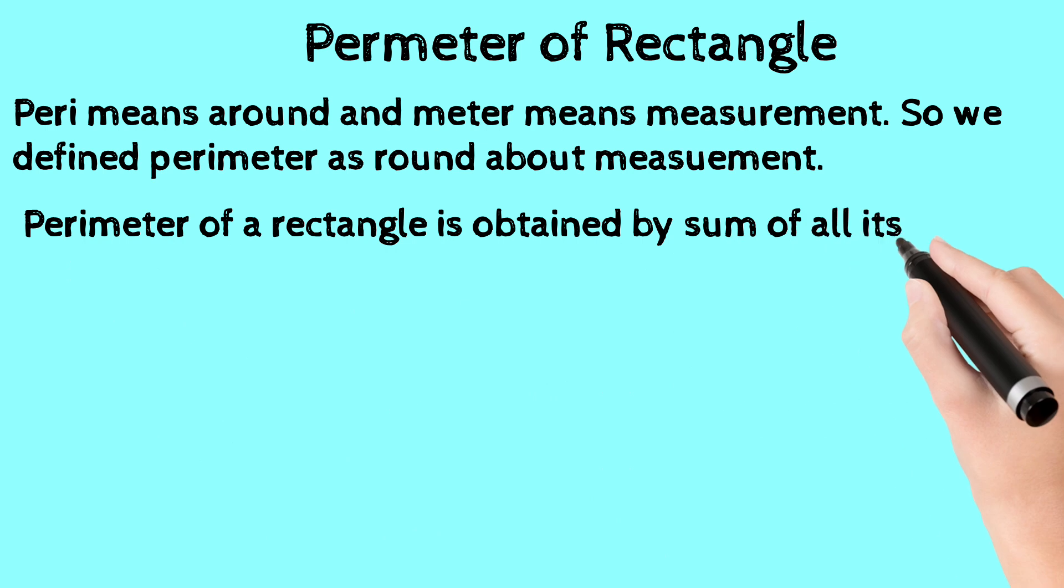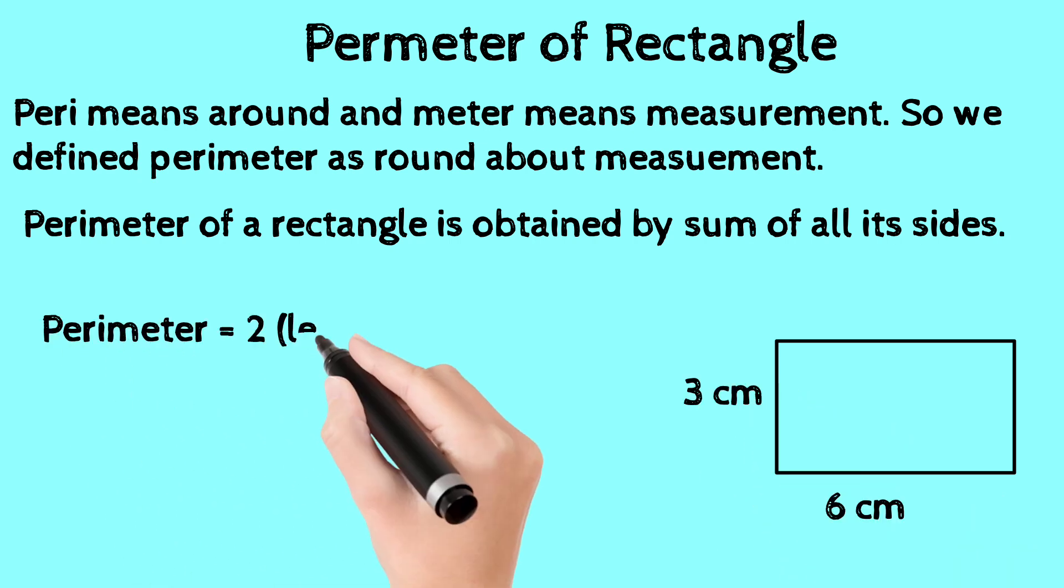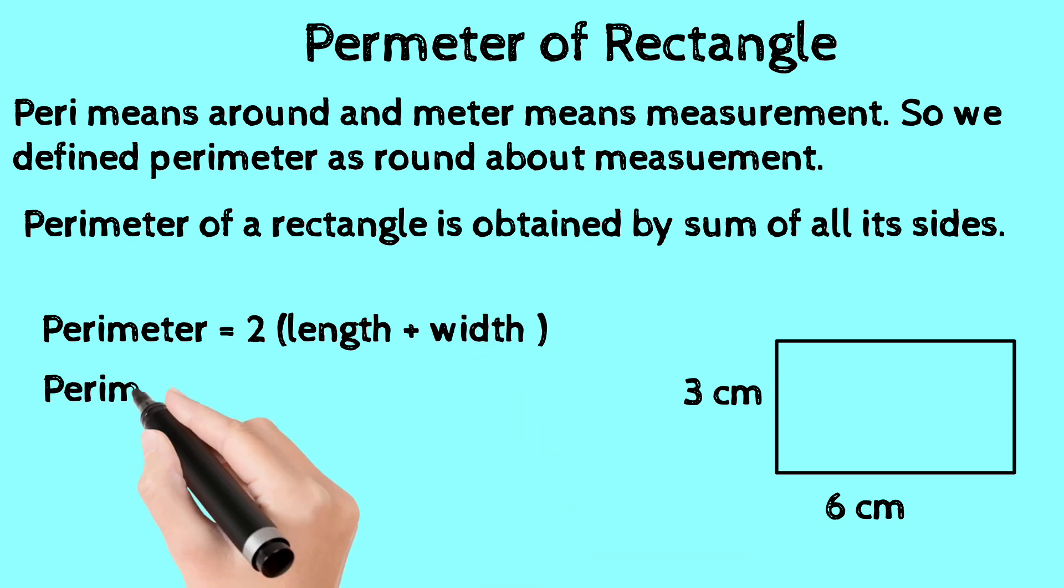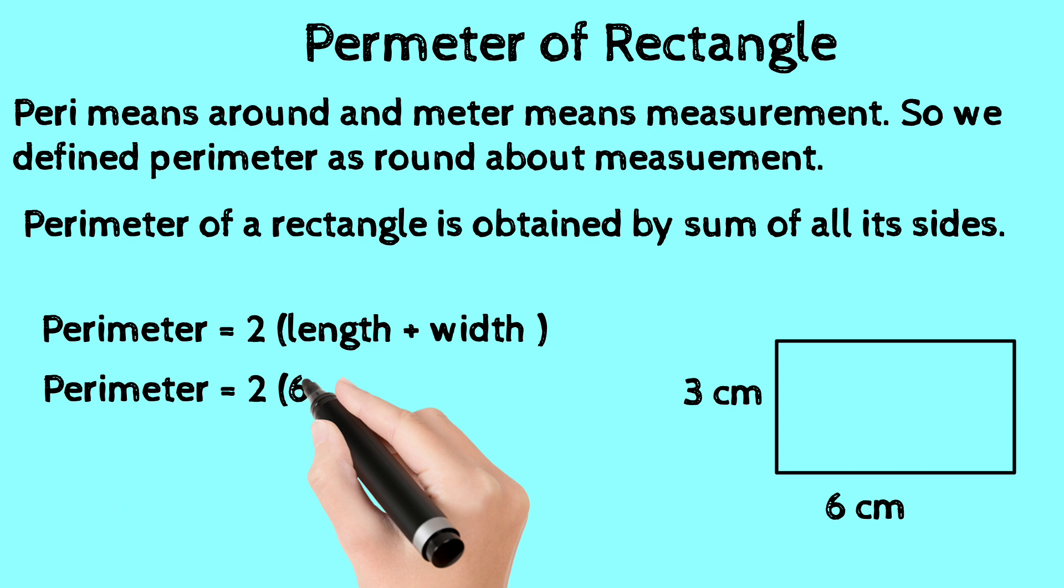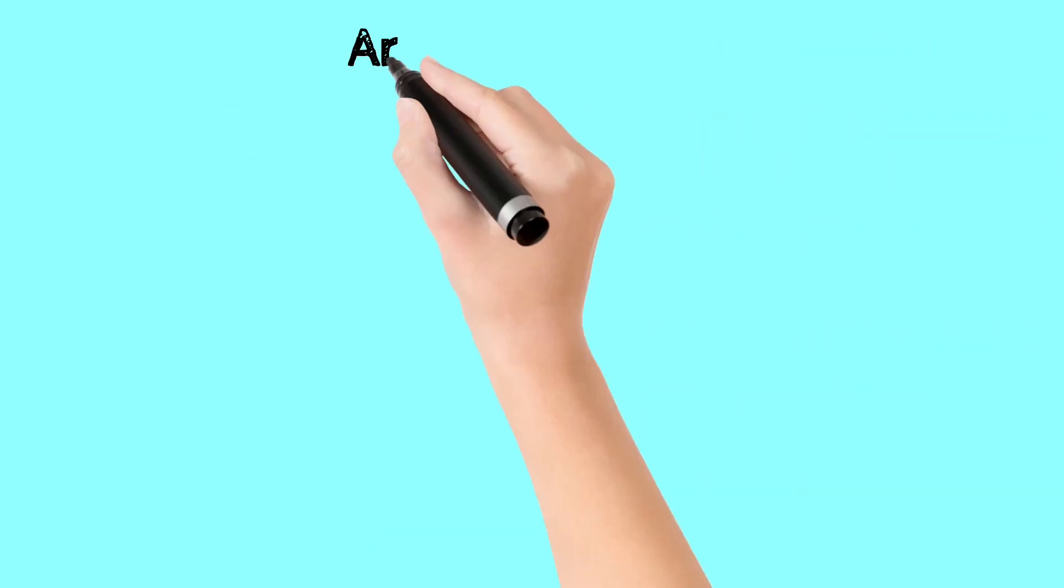The perimeter of a rectangle is obtained by the sum of all its sides. In the previous example, we have length 6 cm and width 3 cm. The formula for finding perimeter is 2 times (length plus width). Length is 6 cm, width is 3 cm, so the perimeter is 18 cm.